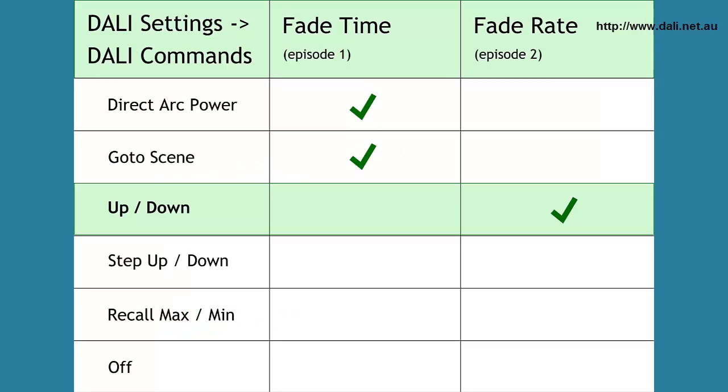The fade rate setting only applies to the Dali Up and Dali Down commands. It does not apply to any go to scene or direct arc power commands. They are controlled with the Dali fade time setting that we looked at last episode. It also does not affect step up or step down commands, as these commands only move by one step or one arc power level at a time.